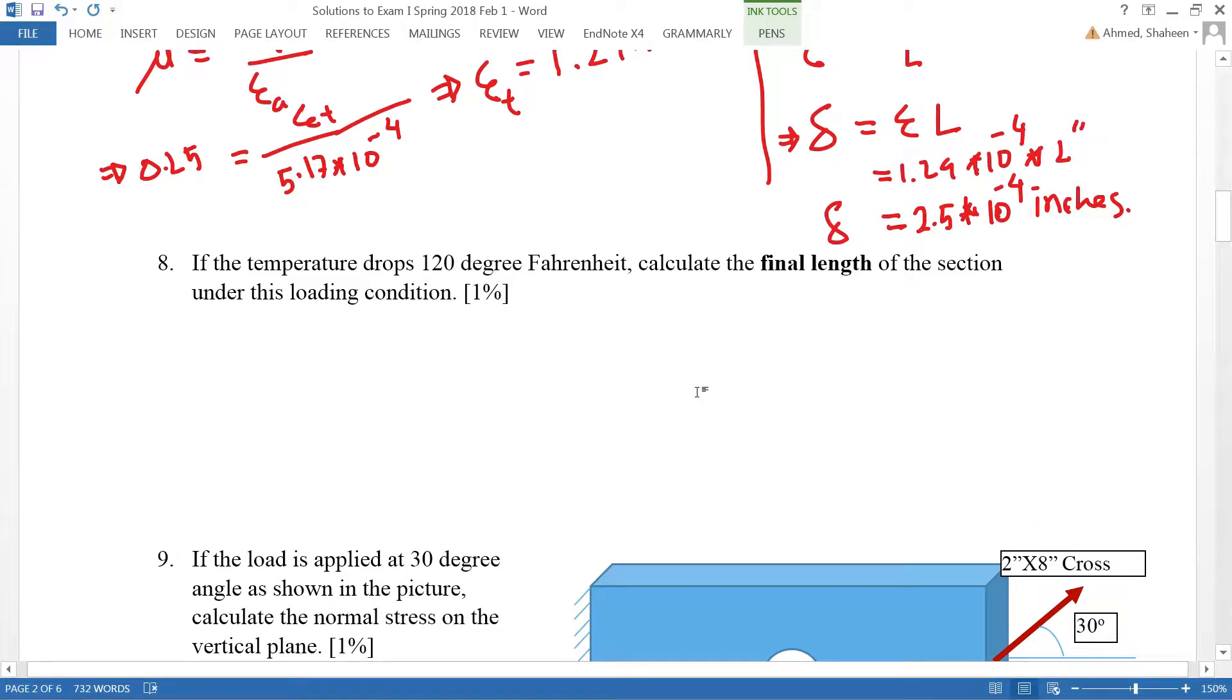In this example, we're going to show you how to consider the temperature effect on stress and deformation. As you've seen in the earlier explanation video, the deformation due to temperature can be calculated by Delta equals Alpha, which is the thermal coefficient, times length and change in temperature. This is the same problem we are solving.